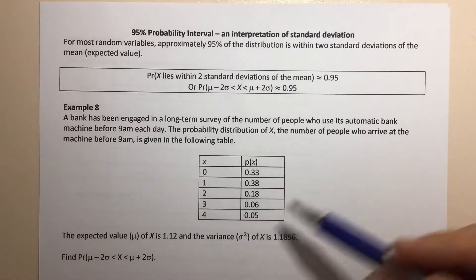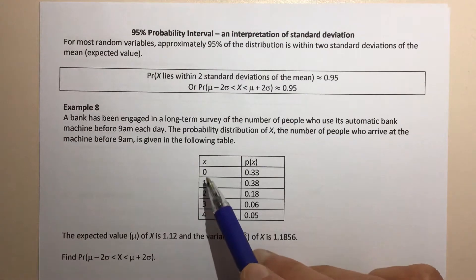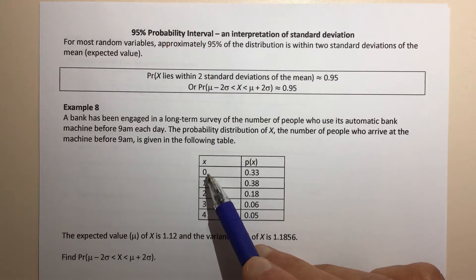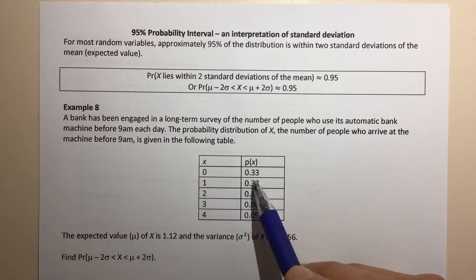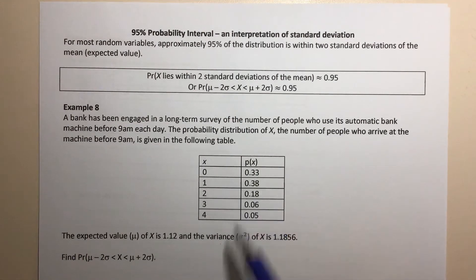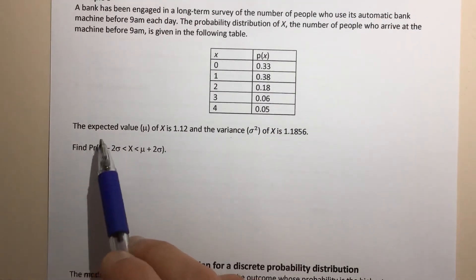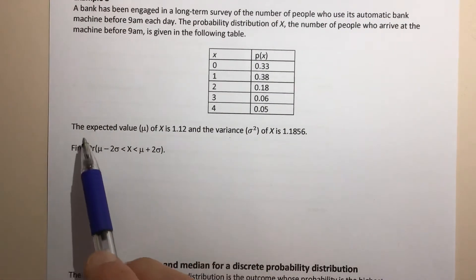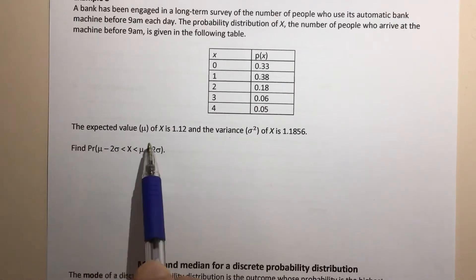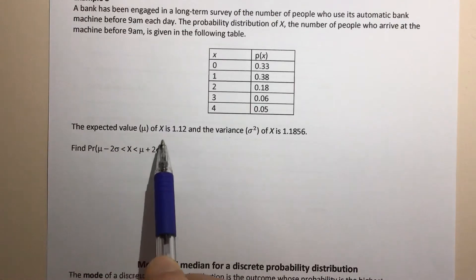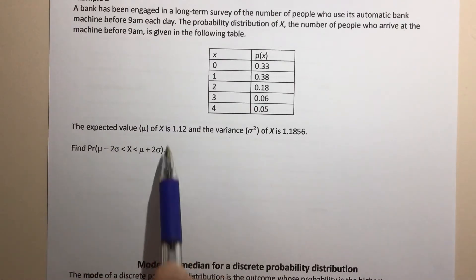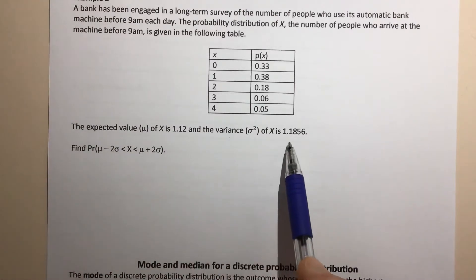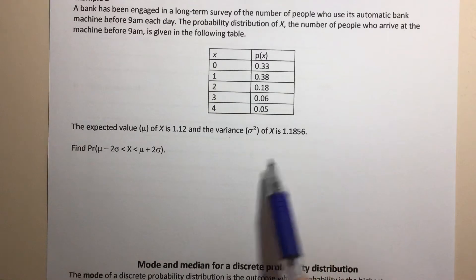For example, the probability that nobody uses the machine before 9 a.m. on a particular day is 0.33. We're given some helpful information in this question so we don't have to work it out ourselves: the expected value of X is 1.12, and the variance is 1.1856.